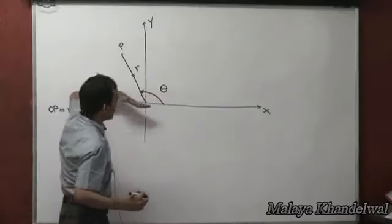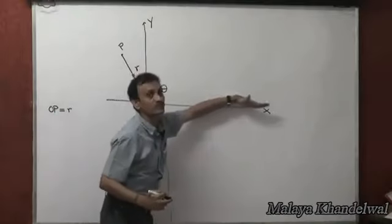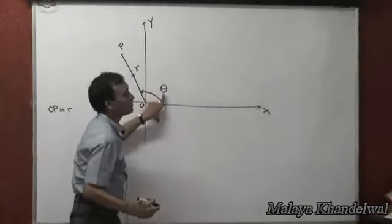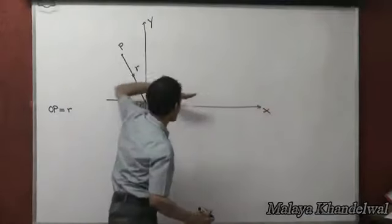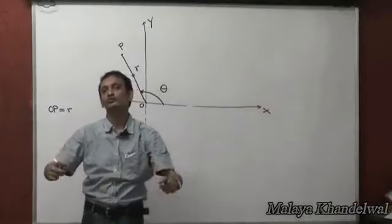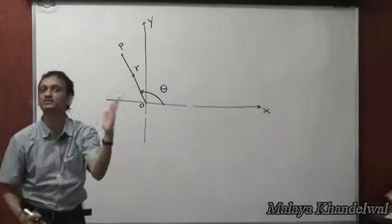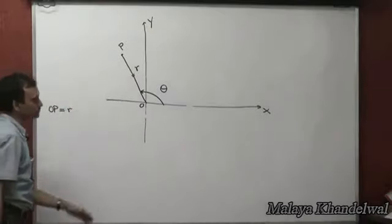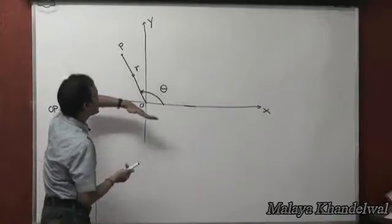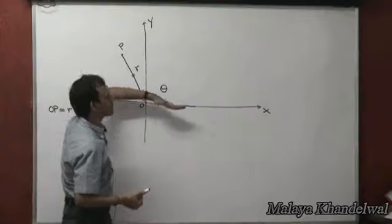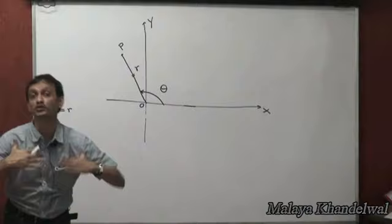If the line has rotated in the anti-clockwise sense with respect to the positive direction of the x-axis, this angle theta will always be measured with respect to the positive direction of the x-axis. Henceforth, this is our reference line for measurement of angles. When the line rotates anti-clockwise, we deem angle theta as positive.